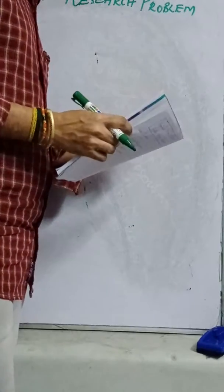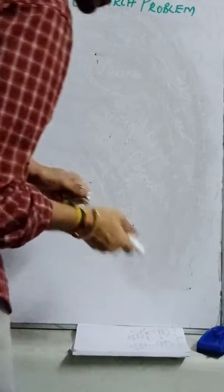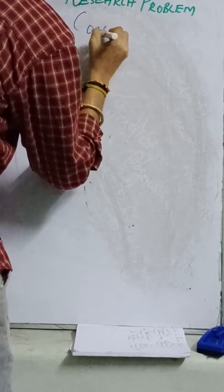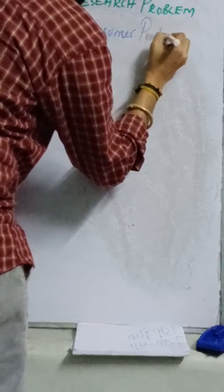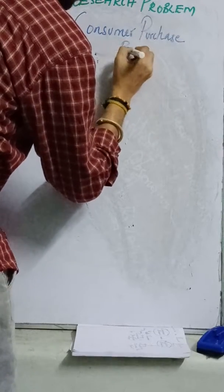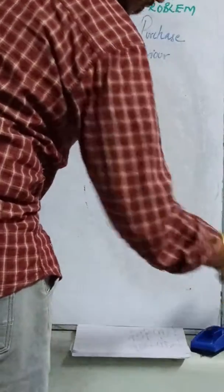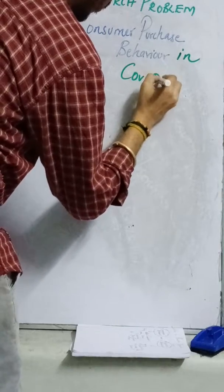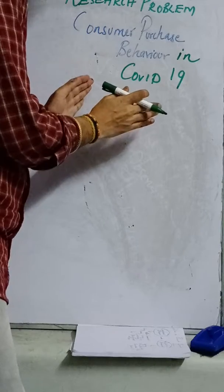Hey y'all, as mentioned in my previous video about a problem statement, I'll tell you how to write a problem statement in a step-by-step chronological manner. I told that my research topic is going to be Consumer Purchase Behavior in COVID-19. This is a broad title of my research.